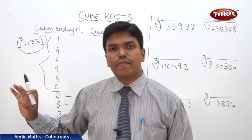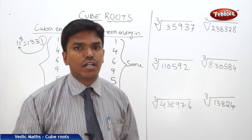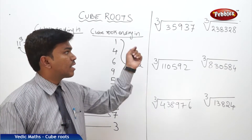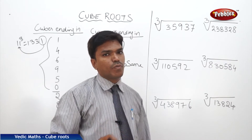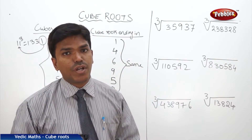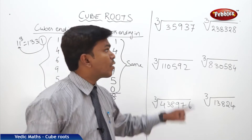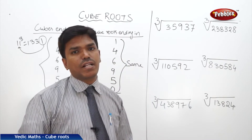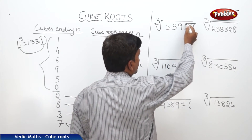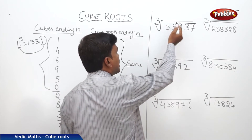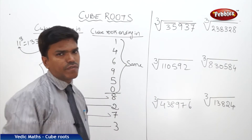If you are thorough with this table and with the cubes until 10, it's very easy to calculate cube roots. Now let us discuss how to find the cube root of a number with an example. The first step — just like in square roots we did a 2-digit partition from the right side — here we do a 3-digit partition from the right side, since cube is to the power of 3. Take the first group of 3 digits from the right, then the remaining digits as the next group.